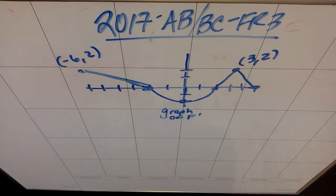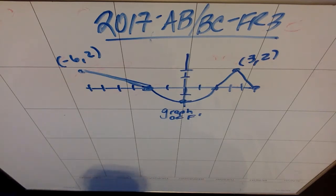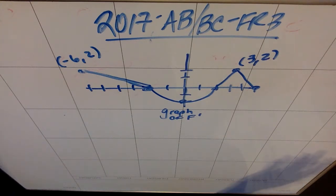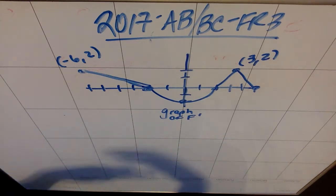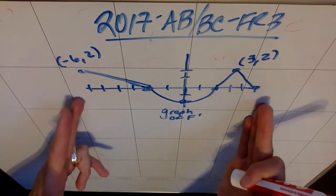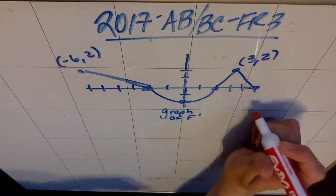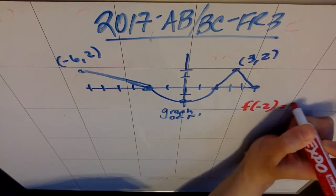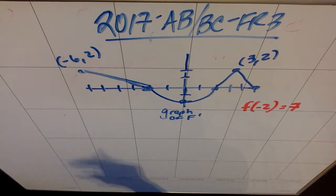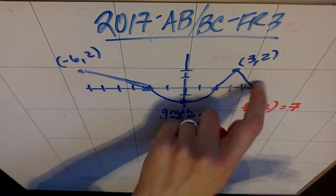AP review — this is 2017 AB/BC free response 3. We're given a graph that consists of a line, a semicircle, and two more lines. Going into this, at some point you'll be asked to integrate this function and use geometry to find the area under these curves. The function f is differentiable on the closed interval from negative six to five. We know that f of negative two is seven, and this is the graph of f prime — not f. It consists of three line segments and a semicircle.